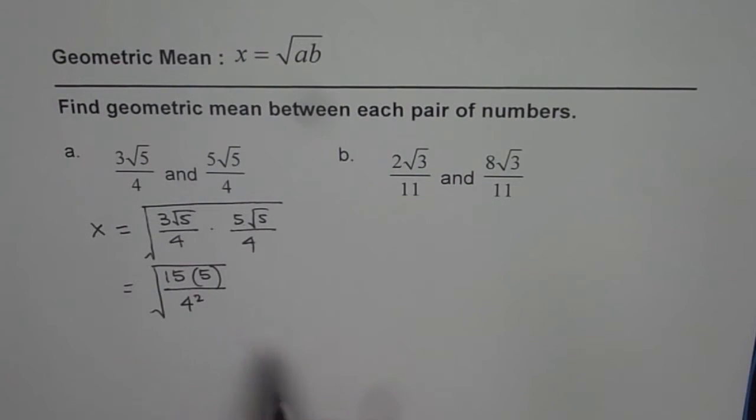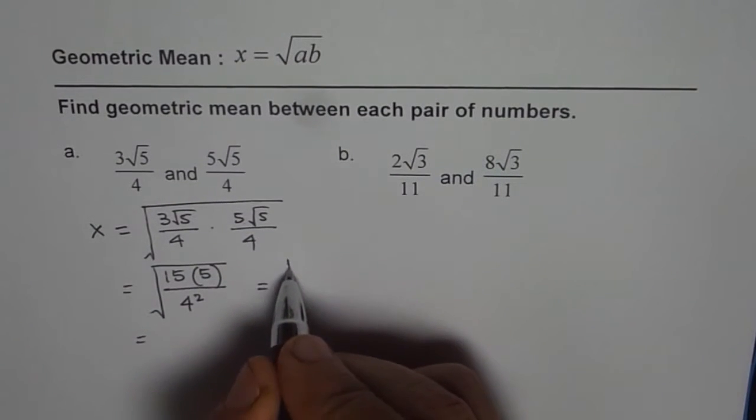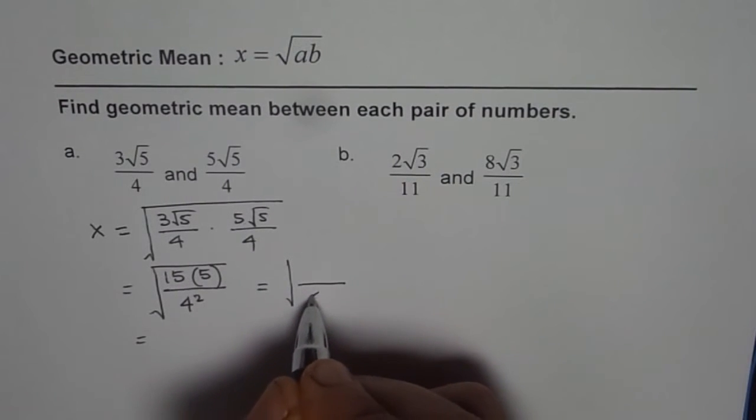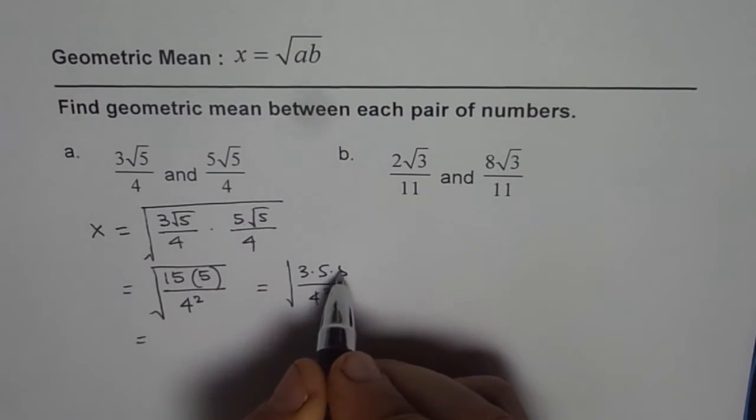Now, 15 is 3 times 5, correct? So you can write this as, let me write here first. So what we have here is 4 square here. 15 is 3 times 5, we already have a 5 here.